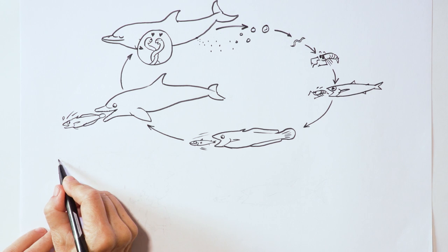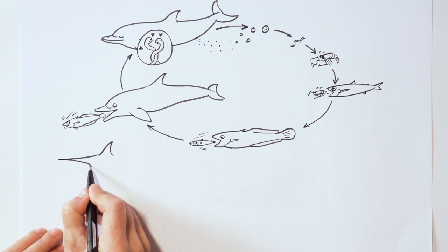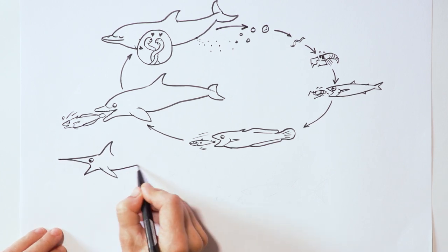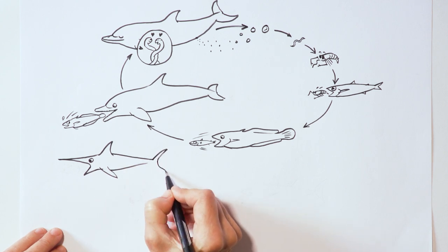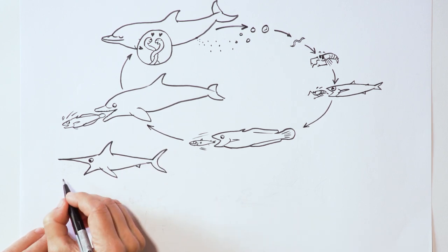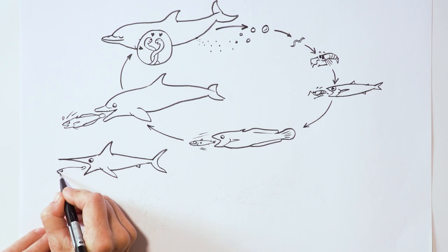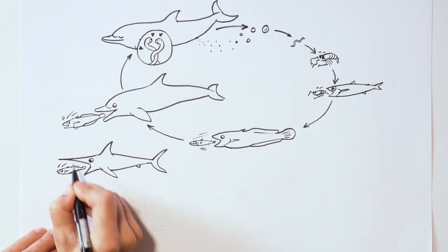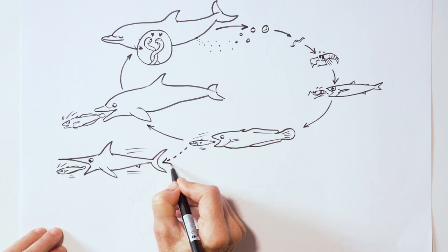But it doesn't always work out this well for the parasite. It could end up in a large fish like a swordfish, and in that case a dolphin would probably never dare to attack and eat a swordfish. As a result, the anisakis won't be able to breed because it can only do so in a dolphin.